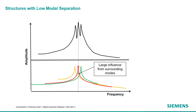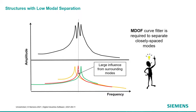But what about a scenario where we have a lot of modes that are clustered — close together? They could influence each other. So that imaginary portion of the FRF may not be due to just one mode — it could be contaminated by the surrounding modes. For structures that have low modal separation or have a lot of modes clustered together, we need a different strategy for determining the natural frequencies, damping, and mode shapes, and we do something called a multi-degree of freedom curve fitting — where we analyze all of the frequency response functions at once and do some math to extract the modal parameters.